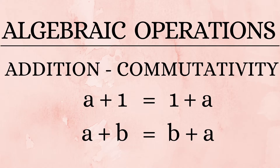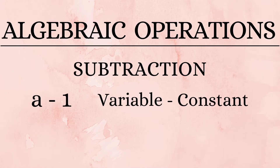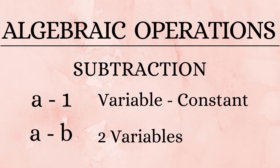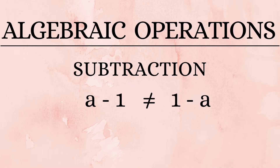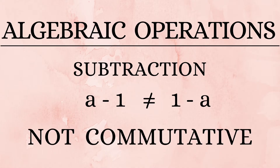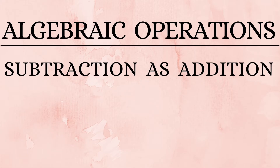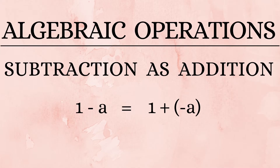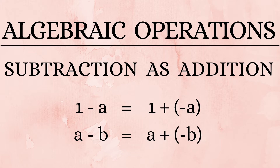Now we move to subtraction. 'a minus 1' shows the difference between a variable and a constant, and 'a minus b' shows the difference between two variables. We need to remember that the terms in subtraction can never be interchanged — 'a minus 1' will not equal '1 minus a.' In other words, subtraction is not commutative. Also, in algebra, subtraction is often expressed as addition of the negative counterpart, so '1 minus a' can be written as '1 plus (minus a),' and 'a minus b' as 'a plus (minus b).'